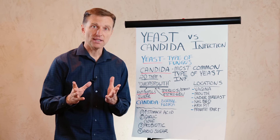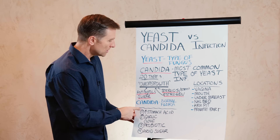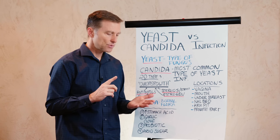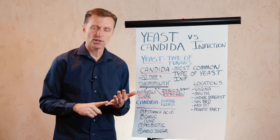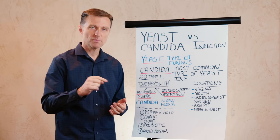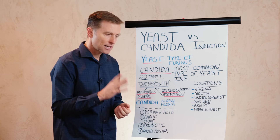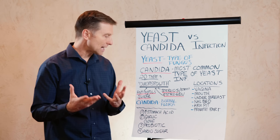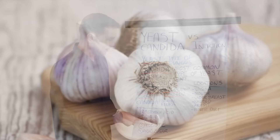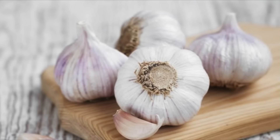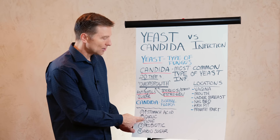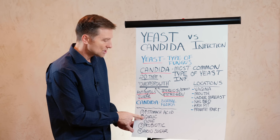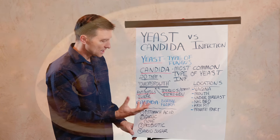So what do you do if you have a yeast or candida infection? Number one, you want to increase the stomach acid. I would recommend something called betaine hydrochloride — I'll put the spelling down below. Take that on a regular basis. Apple cider vinegar is also very important; you can get it in tablet form. Garlic is essential — start consuming garlic in your food. I'm not talking about rubbing it on your body because it can burn; just consume it in your food or take it as a supplement.